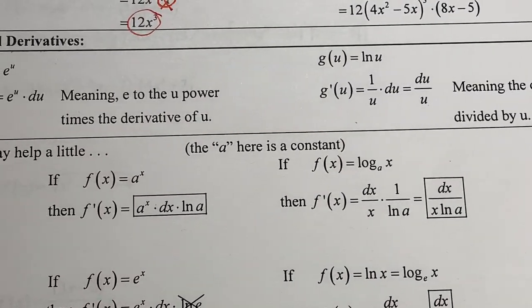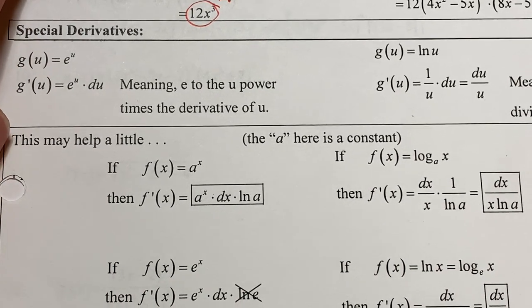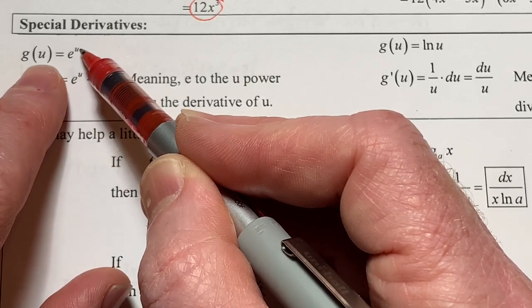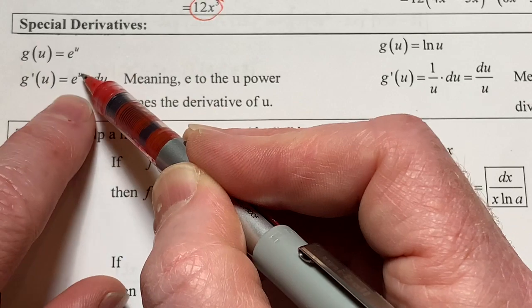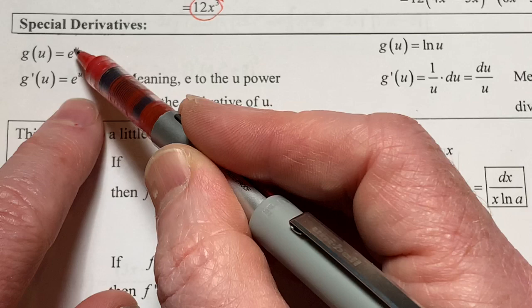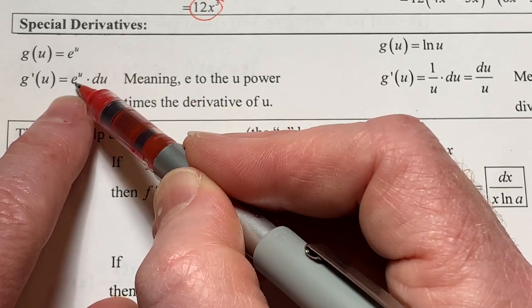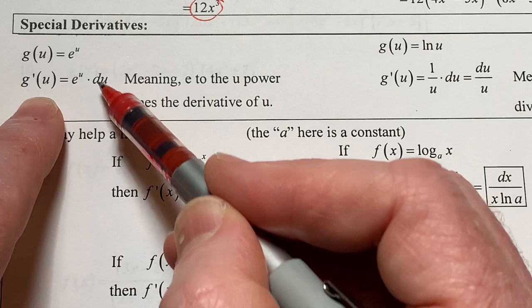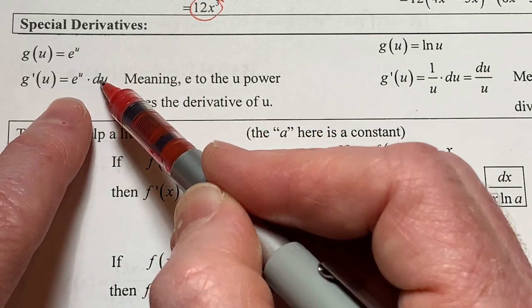The other special derivatives are the exponential function and the log function. For the exponential, I gave you the g function as e to the u. Whenever you have e to a power, the derivative — which is really nice — is you just copy it down. Literally the derivative of an e function is the e function itself. Then the chain rule says go back and take the derivative of the exponent — the blah. So the derivative looks like e to the blah times du.